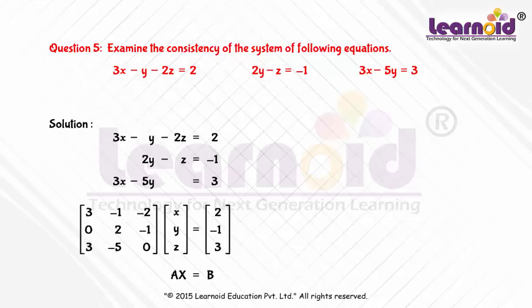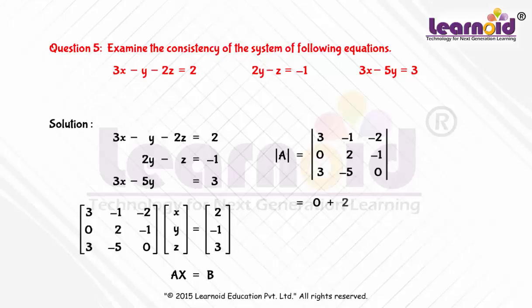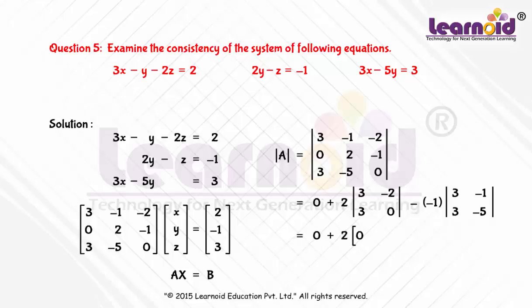To check consistency, we will first find the determinant of A. The determinant of A is equal to [3, -1, -2; 0, 2, -1; 3, -5, 0]. Expanding along the second row, we get determinant of A is equal to 0.